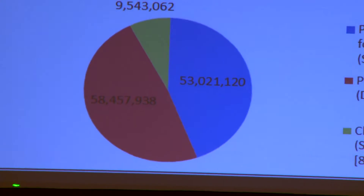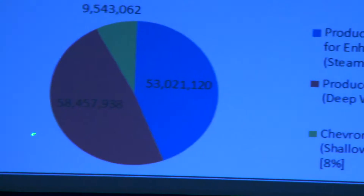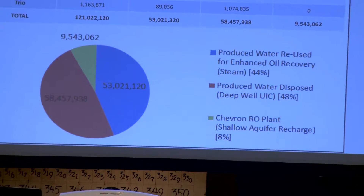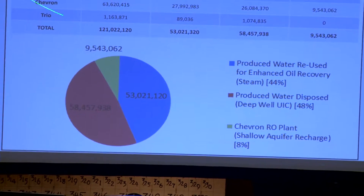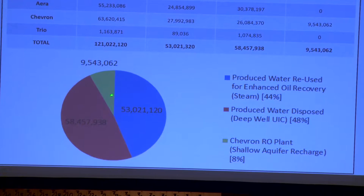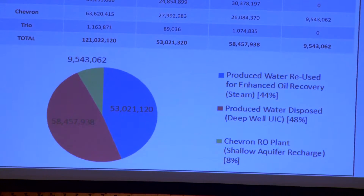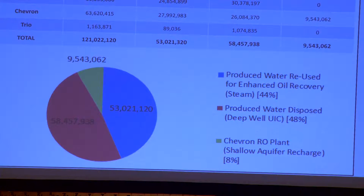In the San Ardo field, there are three main ways that water is disposed of. Looking at the pie chart: the red slice is water disposed of via water disposal wells back into the formations the oil was originally removed from. The blue slice is water cleaned up and re-injected as steam as part of enhanced oil recovery. The green slice represents almost 10,000 barrels in 2015 that was cleaned up through a reverse osmosis treatment plant to very clean levels, then put into shallow infiltration basins to help recharge the groundwater in that area.